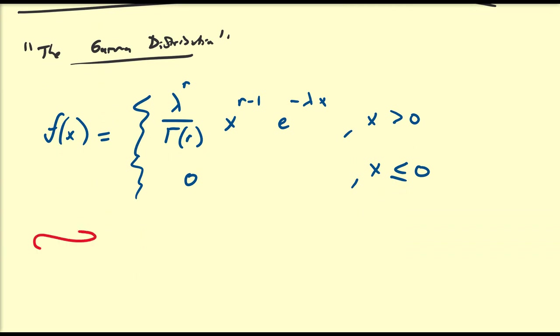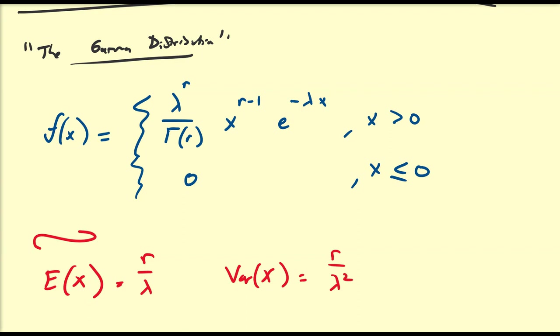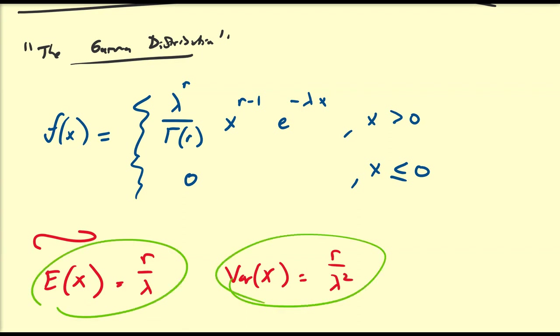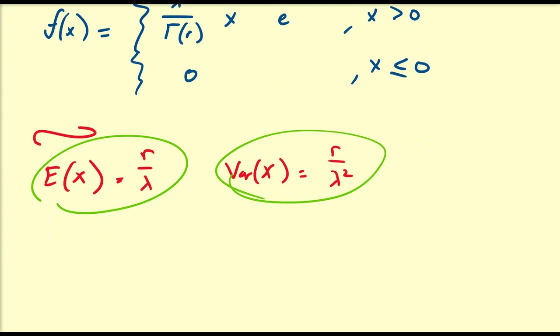The expected value of x is equal to r divided by lambda, and the variance is equal to r divided by lambda squared. These formulas should look vaguely familiar because this distribution is related to another distribution, so let's look at that first.